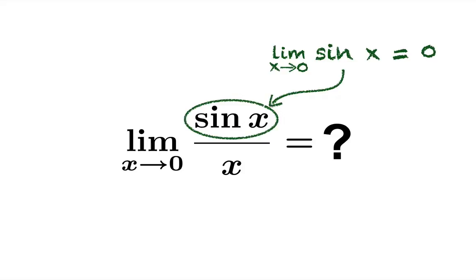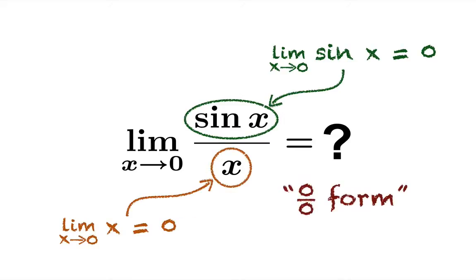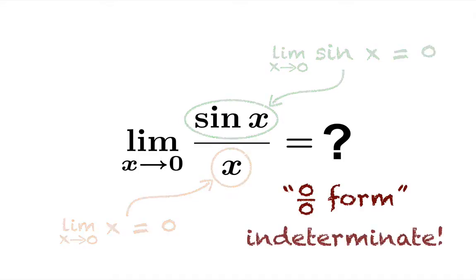Now notice the numerator goes to zero and the denominator goes to zero. So this is a zero over zero form. We can't just substitute zero in to find the limit. It's indeterminate. We're going to have to do some work. But the question is what can we do with this? It's not obvious how to use algebra to shake this loose.